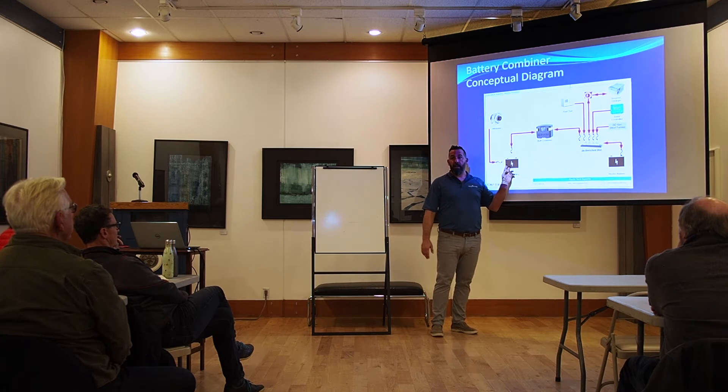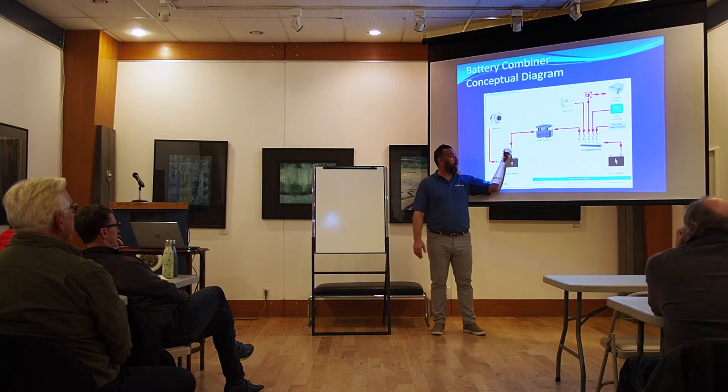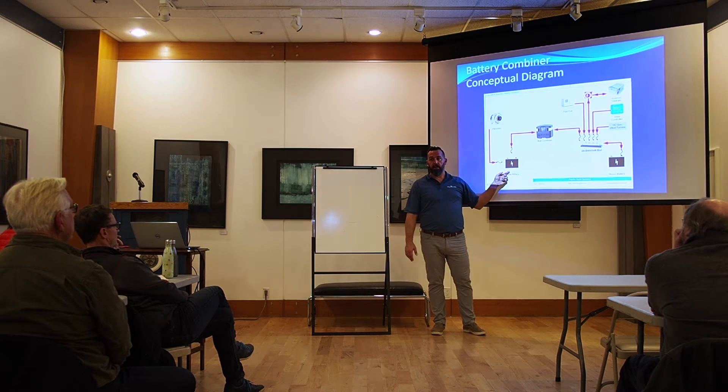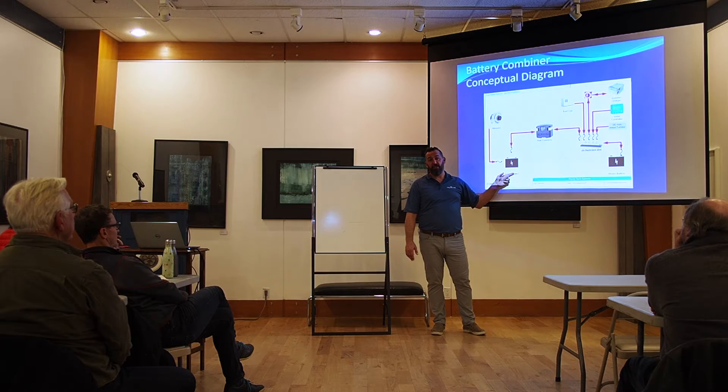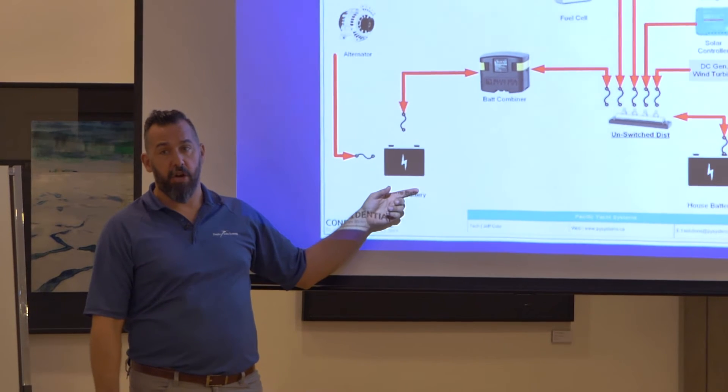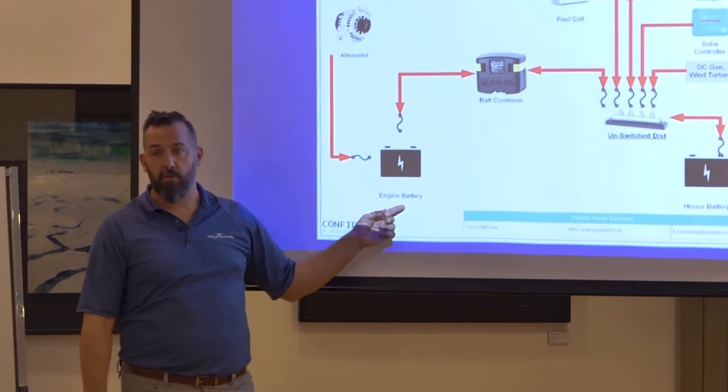And you're assuming it's getting a charge through your combiner. But if the combiner fuse blows, this battery doesn't. And that might be an AGM, it might be two AGMs, two group 31s. And if it doesn't get a charge for five, six months, those batteries are gone.